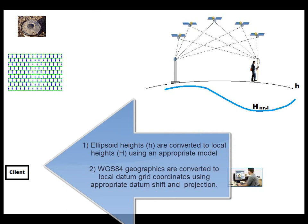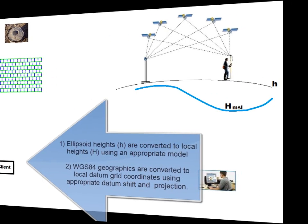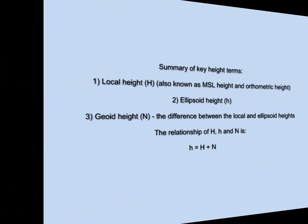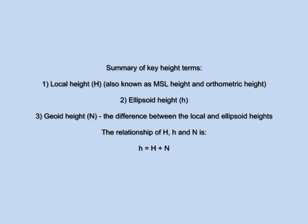Let's finish with a summary of key height and coordinate concepts. There are three heights: local height, also known as MSL or mean sea level height, also known as orthometric height; the mathematical surface ellipsoid height, which is used by GPS satellites; and then there's the geoid height, which is the difference between the local and ellipsoid heights.